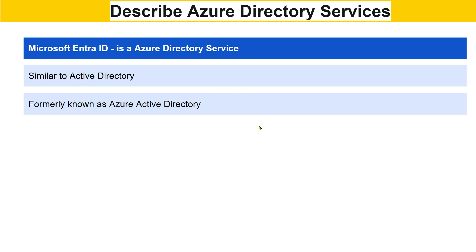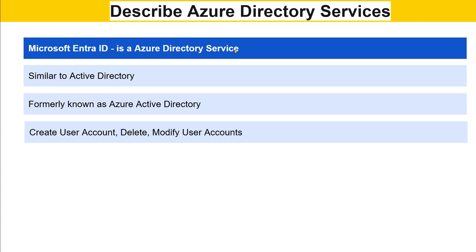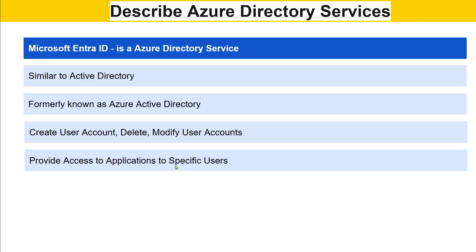What can we do with Entra ID? When we say directory services, it means managing various things. For example, I can create, delete, and modify user accounts. User accounts are generally required for you to access an application — just like Gmail or Facebook. Using Microsoft Entra ID for cloud applications, I can create accounts or give access to other users.